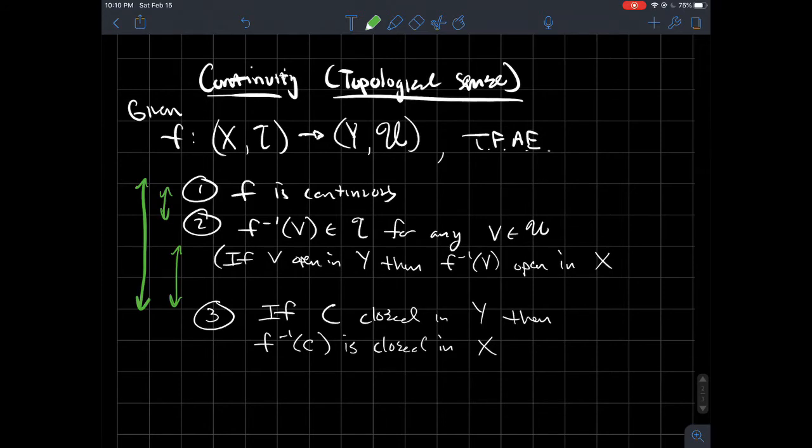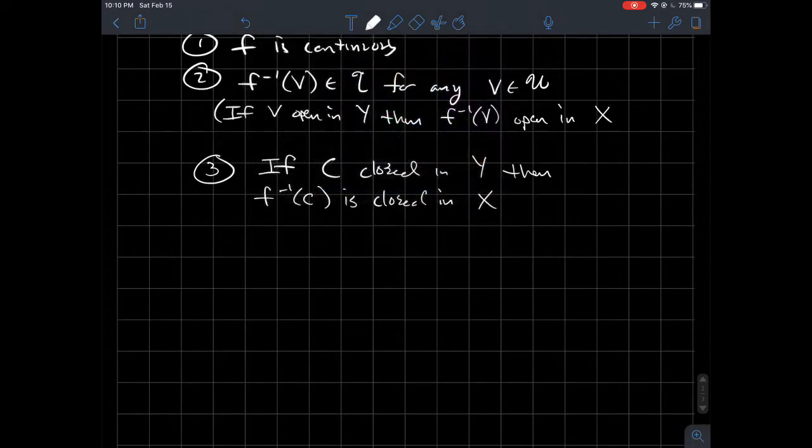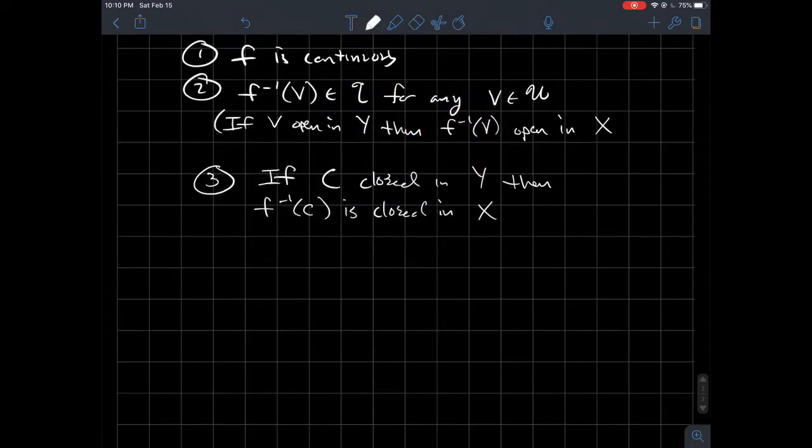So one if and only if two, if and only if three. And in case you've never gone about trying to prove such a thing, how these things are usually structured is you would show one implies two, then you'd probably show two implies three, and then you'd probably show that three implies one as well.